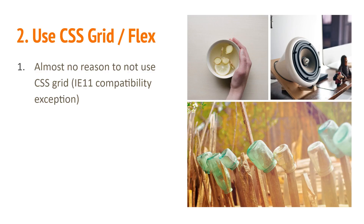Tip two: CSS Grid and Flex. There's a long history of how you laid out properties on a website. A lot of people used to use Floats, which has kind of gone the way of the dodo bird — sometimes still used to wrap text around images, but not for layout. Now we have great tools like CSS Grid and Flex, which make it really easy to do one-dimensional and two-dimensional layouts. Most people have moved on to learning Flex in the last five years.